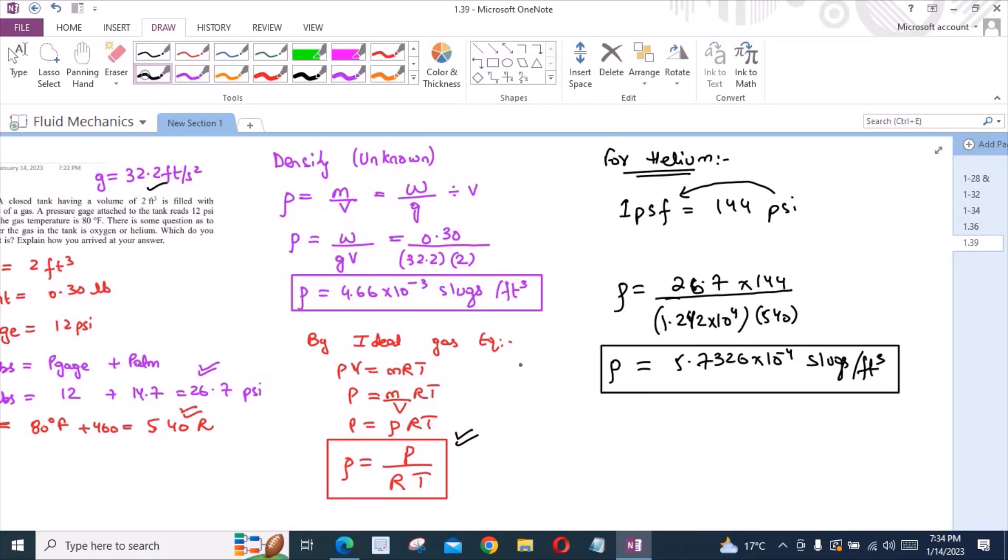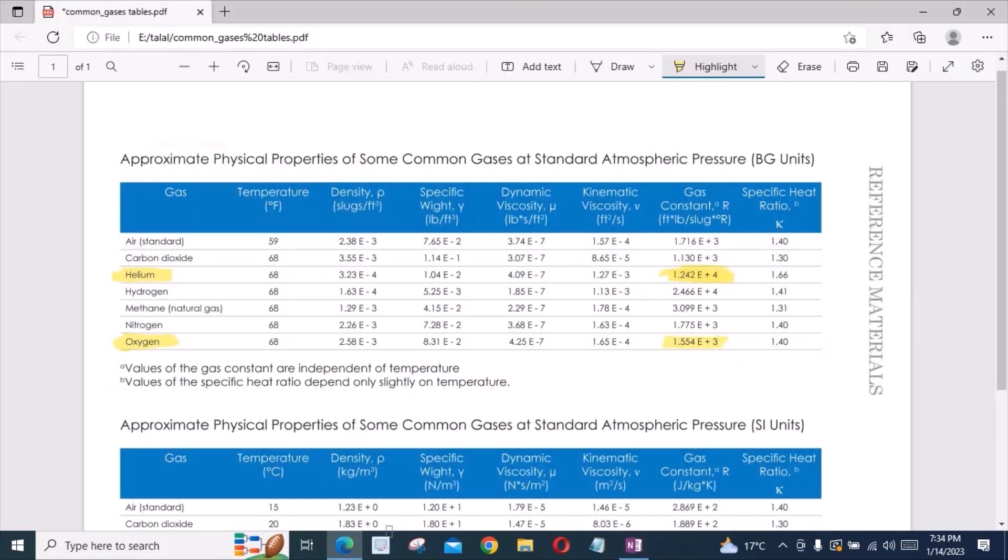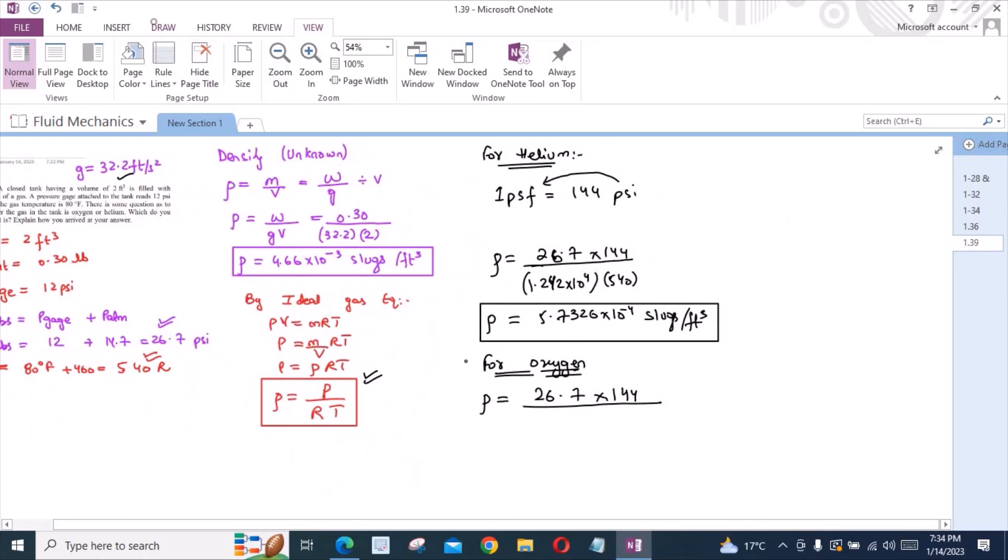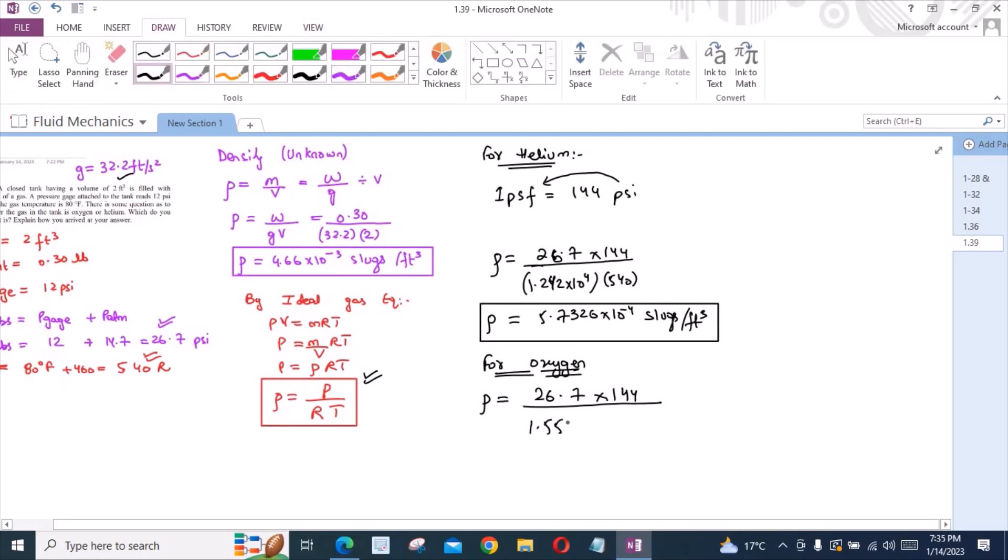Now for oxygen. We have the same equation. We have the same pressure. And we have to convert it into pounds per square feet. So we would multiply it with 144 divided by the gas constant for oxygen. And from the table, the gas constant for oxygen is 1.554×10³ times the temperature in Rankine. So from here, density of oxygen is equal to 4.5817×10⁻³ slugs/ft³.